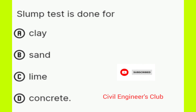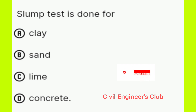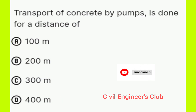Next question: Slump test is done for — Option A: clay, Option B: sand, Option C: lime, Option D: concrete. The correct answer is option D, concrete. Slump test is done for concrete.